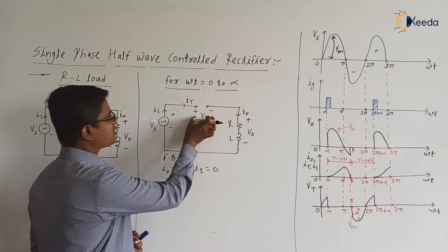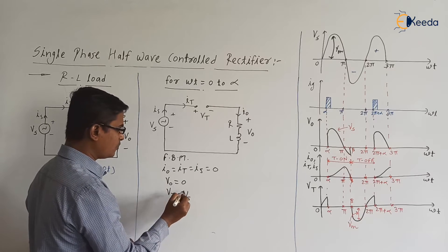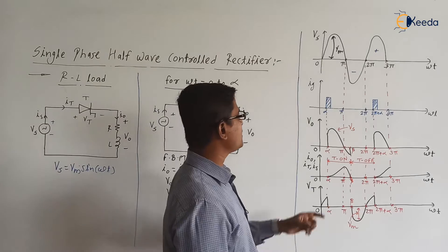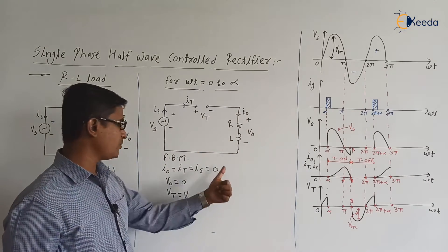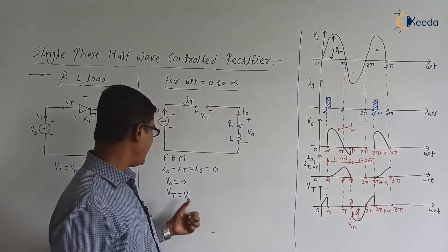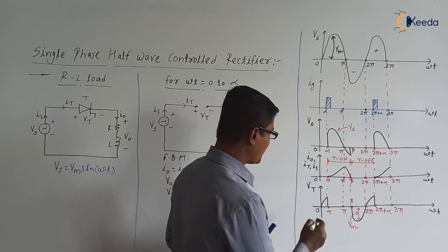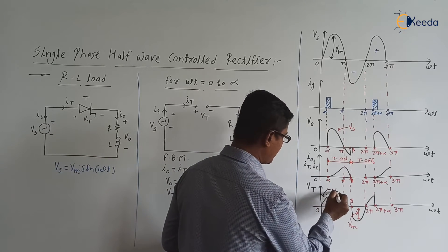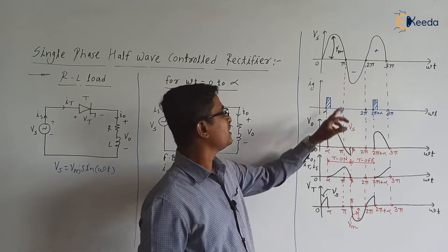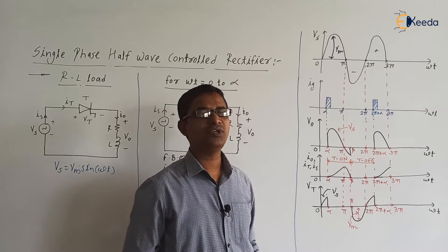What is Vt? If we apply KVL, we get Vt = Vs. So from ωt = 0 to α: V₀ = 0, and Vt is the same as the supply voltage Vs. Whatever the pulse we are having in the supply voltage from 0 to α, the same pulse is copied in Vt.